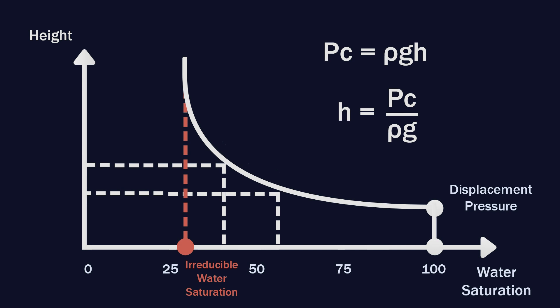The height at which capillary pressure is equal to zero is called free water level. Water saturation is equal to 100%. The height at which displacement capillary pressure exists is called oil-water contact.